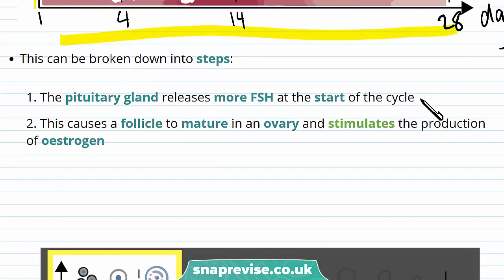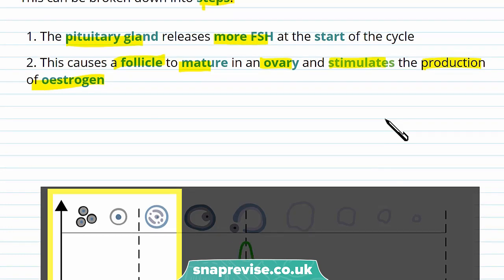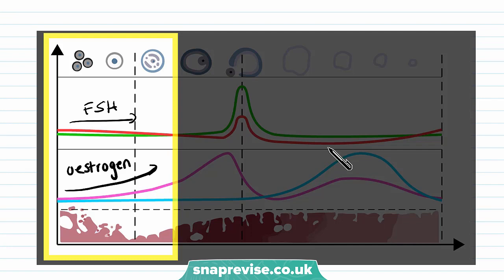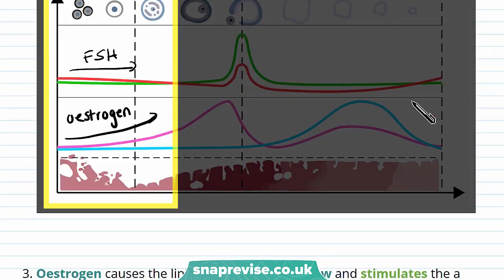The first stage is that the pituitary gland releases more FSH at the start of the cycle. This causes a follicle — which is an egg and its surroundings — to mature in an ovary, and stimulates the production of estrogen. We can see in the graph that as FSH increases at the start of the cycle, the levels of estrogen also increase, causing the follicle to mature.